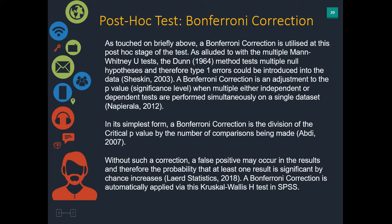When you run tests with multiple null hypotheses, type 1 errors can occur. A Bonferroni correction is an adjustment to your significance level — your p-value. In its simplest form, it's the division of the critical p-value by the number of comparisons being made. The more comparisons you make, the higher your type 1 error and the larger your Bonferroni correction. Without correcting it, a p-value of 0.001 could be a false positive — once you add in the room for error, it might actually be above 0.05 and not significant. In SPSS, you don't have to worry about this, because SPSS will already apply a Bonferroni correction when running a Kruskal-Wallis H test.